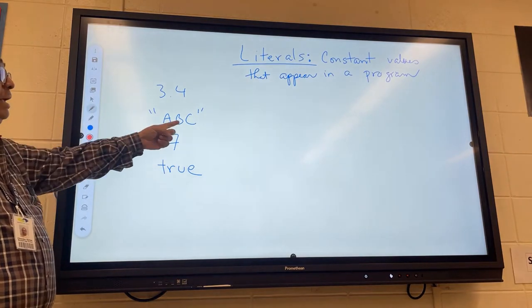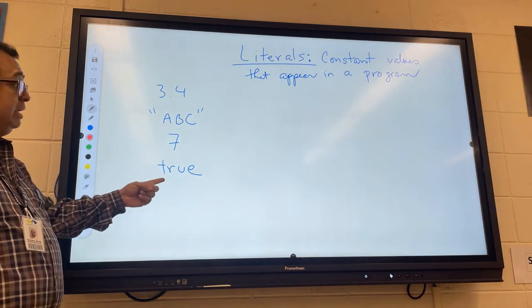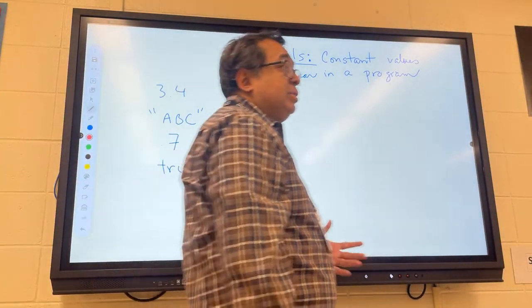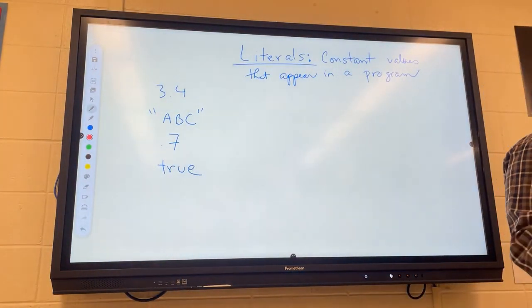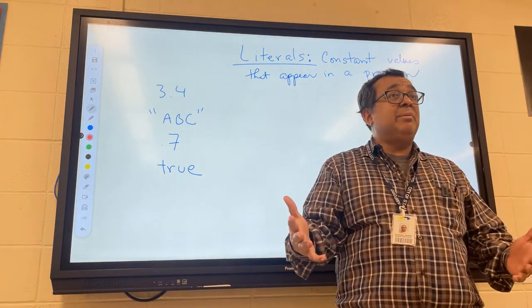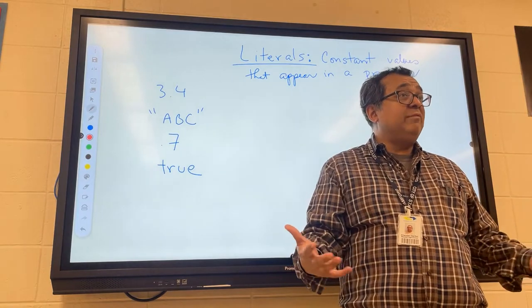3.4, the string ABC, the integer 7, and the Boolean value true. Now, literals are interpreted exactly as what they are. So when the compiler sees 3.4, it realizes that it's a decimal number of the value 3.4.